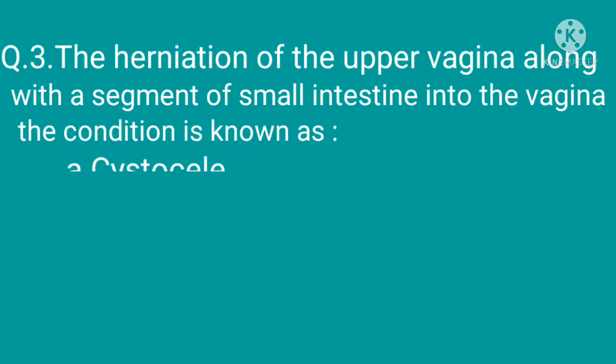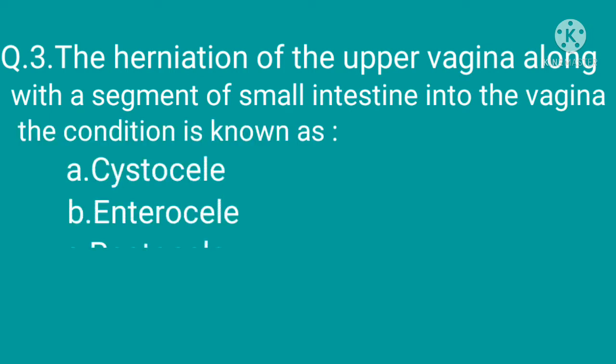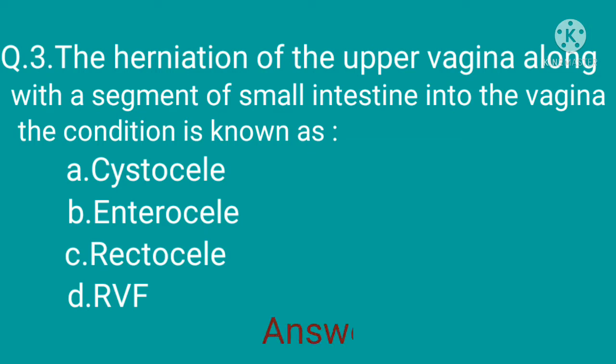Question 3: The herniation of the upper vagina along with a segment of small intestine into the vagina — the condition is known as: option A: cystocele, option B: enterocele, option C: rectocele, option D: RVF. The correct option is option B, enterocele.